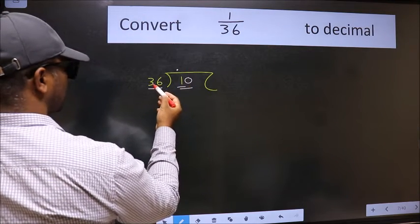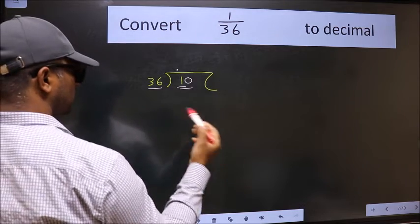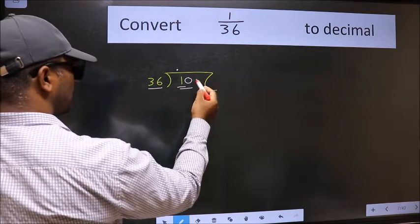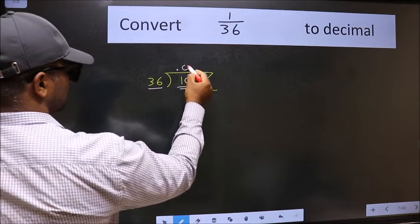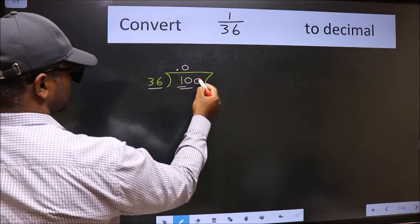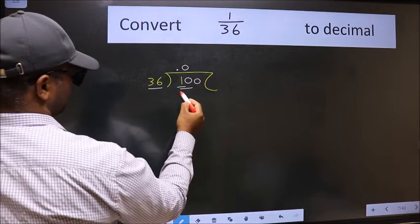10 is again smaller than 36, so we should get one more 0 here. The rule to get one more 0 here is to put 0 here. Then only we can get 0 here. Now 100.